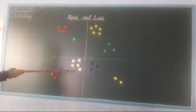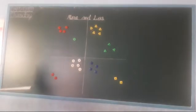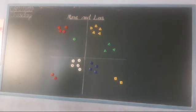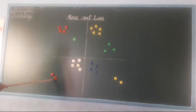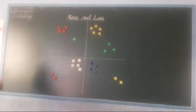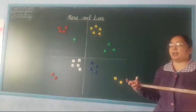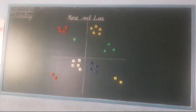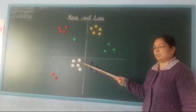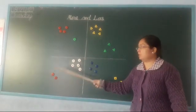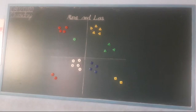Now children, which shape is this? Circle. And which color is this children? White color. Okay, and which color is this? Red. So which circle is more and which circle is less, children? These are more circles and this is a less circle. This one is more and this one is less — more circles and less circles. Understand children.